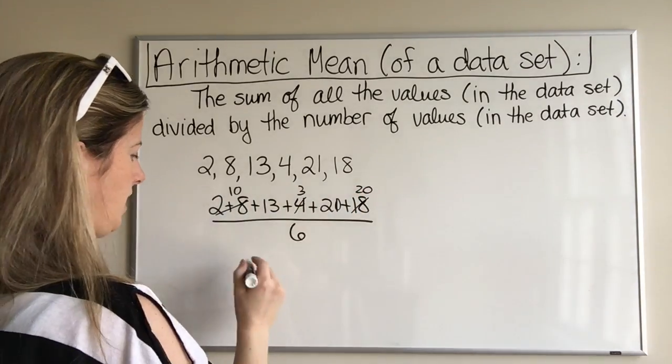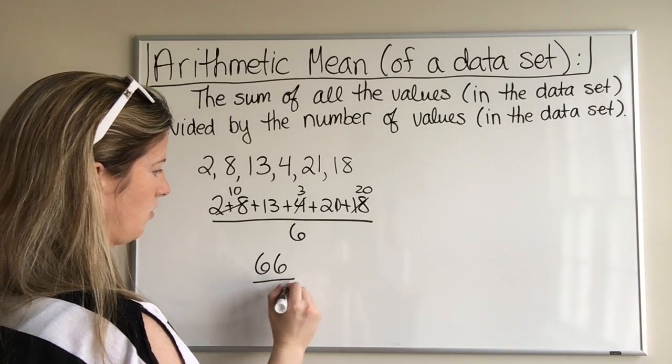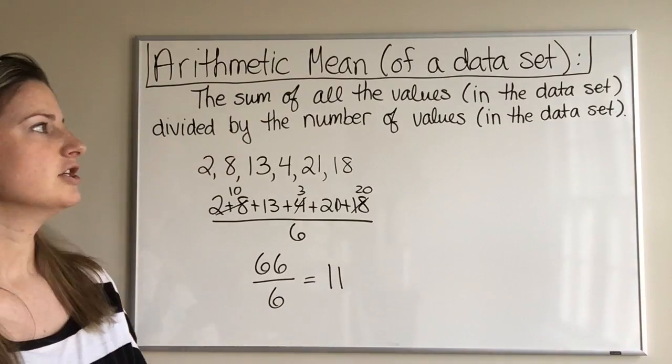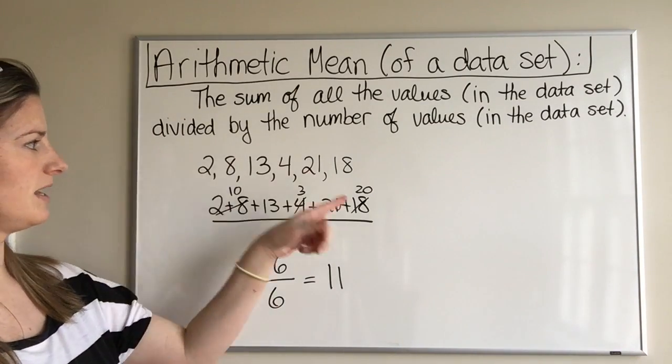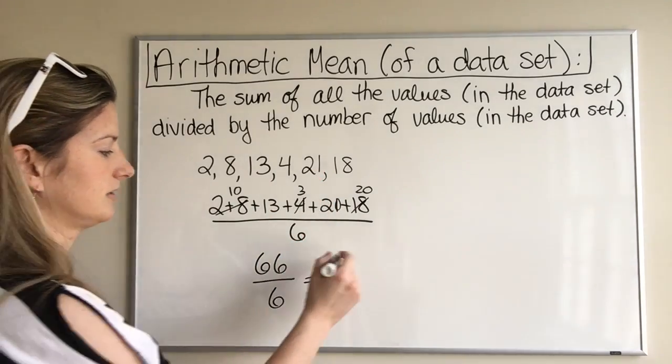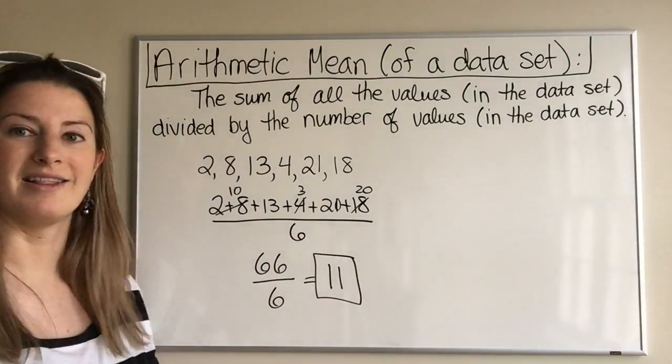Okay, so that's going to be 66 over 6, which equals 11. So if I had asked you what is the arithmetic mean of this data set or this set of values, the answer would be 11.